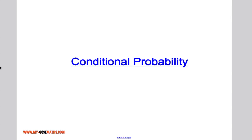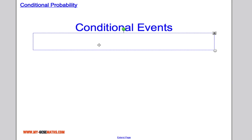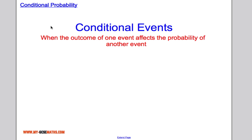In this video we're going to take a look at conditional probability. Conditional events are when the outcome of one event affects the probability of another event.